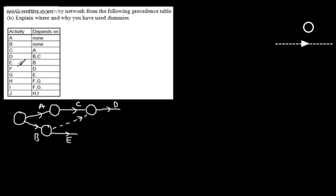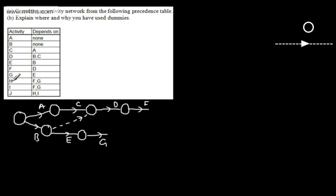F is now dependent on D only, so we end D and start F. If we consider G, only E has to finish, so E finishes at its node and activity G springs out from there. H needs both F and G to finish, and so does I. So we bring F and G together into one node, and H and I can spring out from that event.